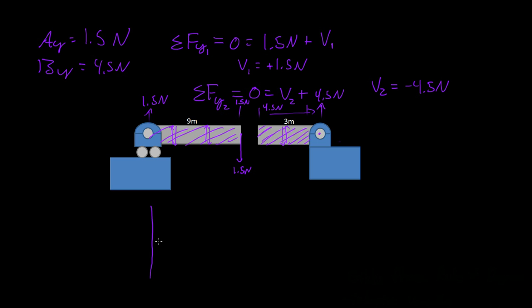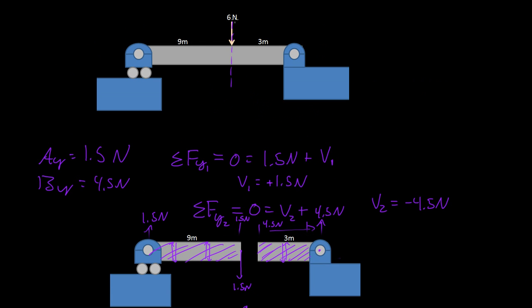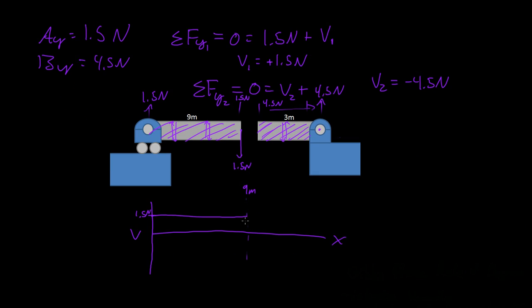So if we were to graph that, just graph the shear force versus the distance X, and we'll say this is 9 meters. And this was 1.5. Throughout the entire beam until 9 meters, we have a shear force of 1.5 Newtons. Then at the point of this force, it goes straight down. So it's discontinuous, it goes straight down to a negative 4.5 Newtons.